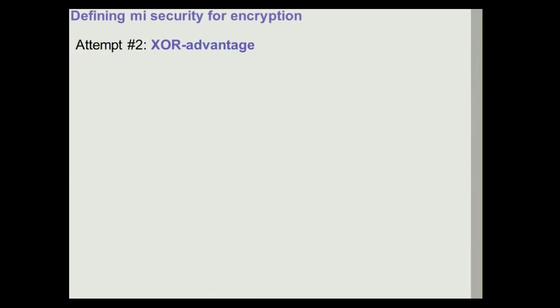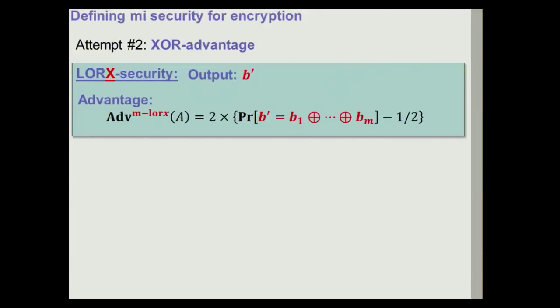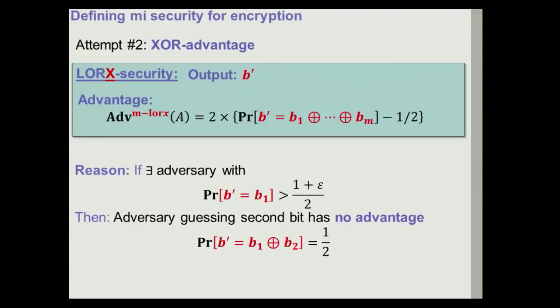And so a better alternative is to look at what we call the XOR advantage, which actually seems to be the right alternative. Here we just let the adversary output one bit, one single bit, not a vector of bits, B prime. And the adversary wins if this bit equals the XOR of all of the bits chosen by the challengers, B1 up to BM. And of course we scale by one half as before. And this is going to be what we call the XOR advantage. And here you see what I've said before doesn't work anymore. So even if you have an adversary which is really good at guessing the first bit and now he tries to randomly guess the second bit, or he doesn't even interact with the other challenger, then the adversary can only guess the XOR with probability one half and he doesn't get any advantage.